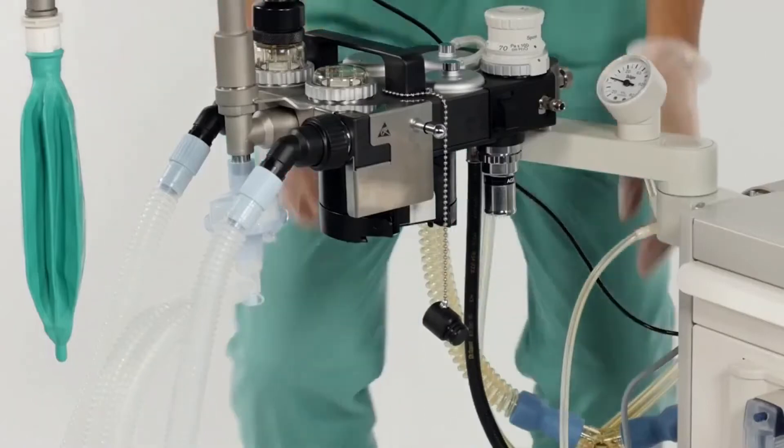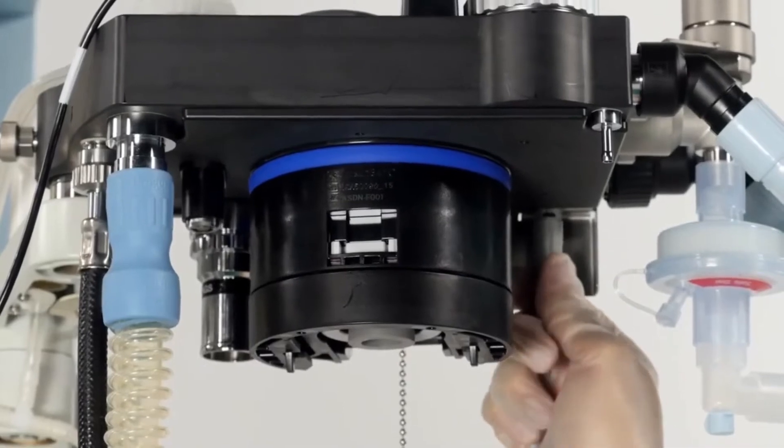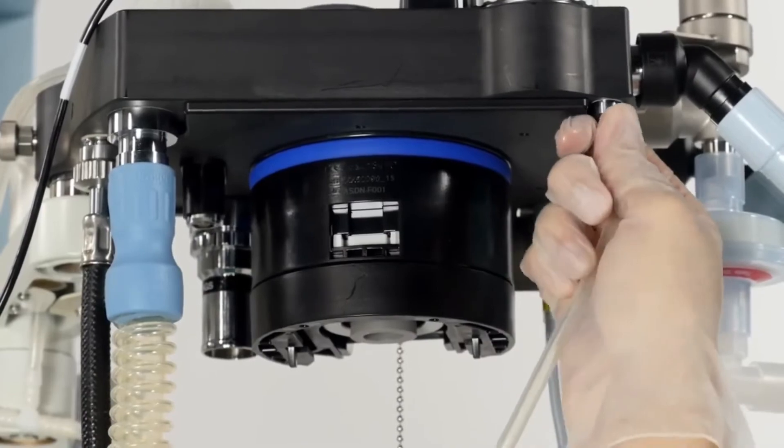Connect the volume line cable and press the pressure measuring line onto the corresponding connector on the underside of the breathing system. Do not squeeze the pressure measuring line during installation.